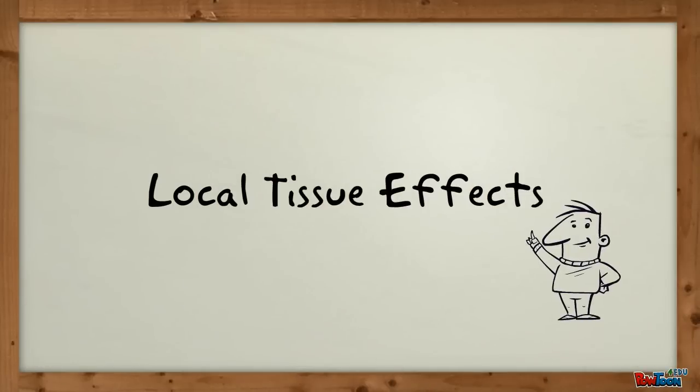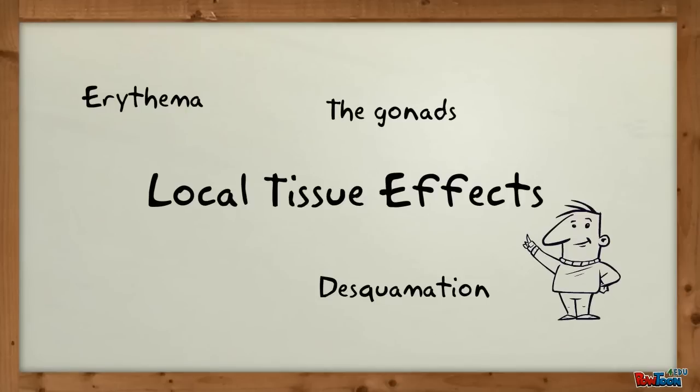There are many examples of local tissue damage by radiation. The first is erythema or skin reddening. This response is followed by desquamation, which is a form of skin ulceration.